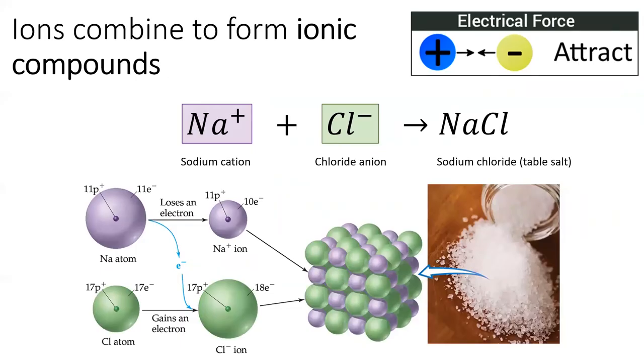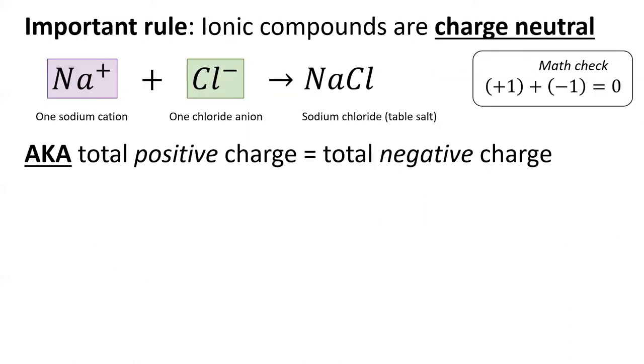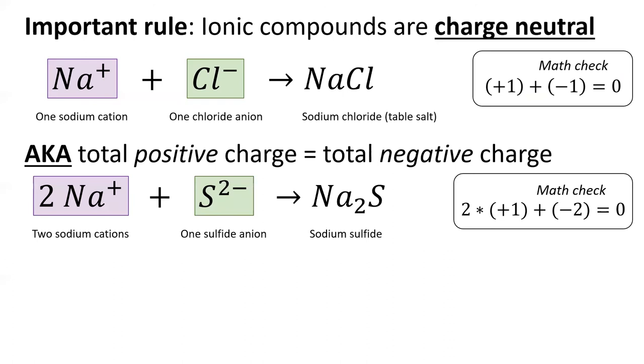After elements become ions, the cations and anions attract each other and they form an ionic compound called a salt. In this class, you will be expected to write the formula for ionic compounds. The most important rule when doing this is to make sure the formula is charge neutral. This means that it has an equal number of positive and negative charges. The formula for sodium chloride is straightforward. Since both ions have a charge of one, you only need to write one of each ion to get a neutral formula. However, in sodium sulfide, you need two sodium atoms for every sulfide atom, since sulfide has a two-minus charge. A sample of sodium sulfide will contain twice as many sodium atoms as sulfur atoms.